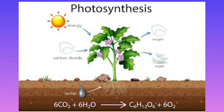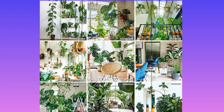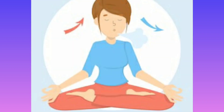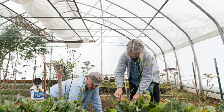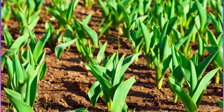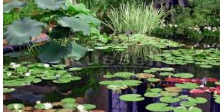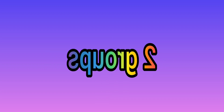Dear children, do you know about photosynthesis? It is a process by which green plants prepare their own food. We would have no oxygen to breathe without plants. Plants are used for many purposes like farming and food. Plants are living things that grow on land or in water.